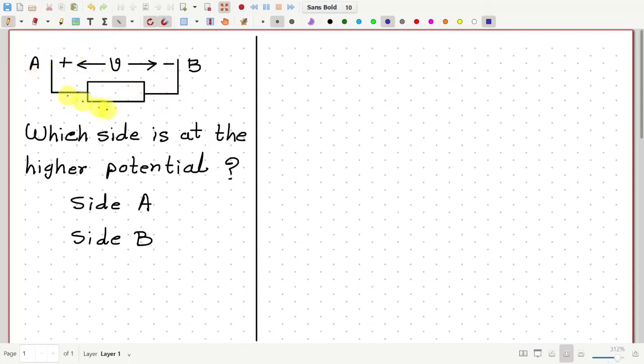Suppose this diagram represents a part of an electrical circuit. This branch has two terminals or two sides, A and B.